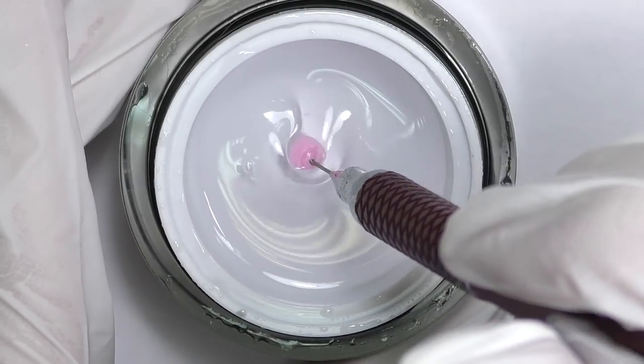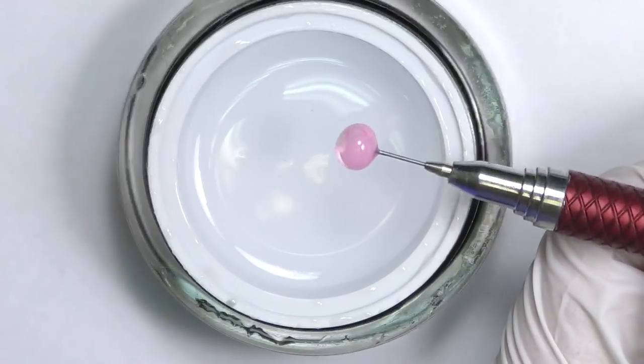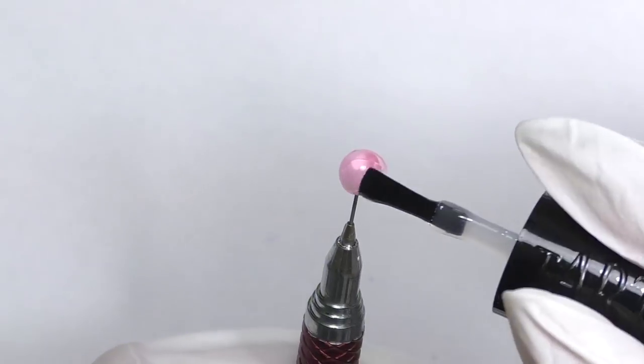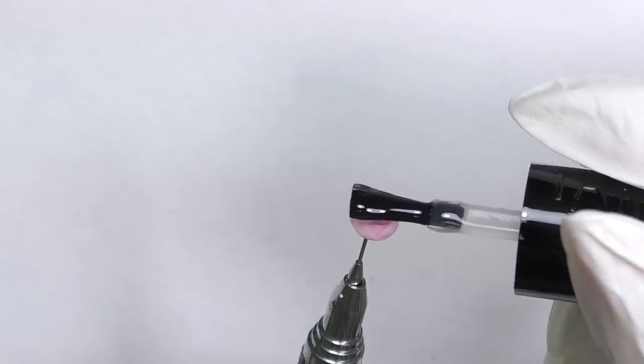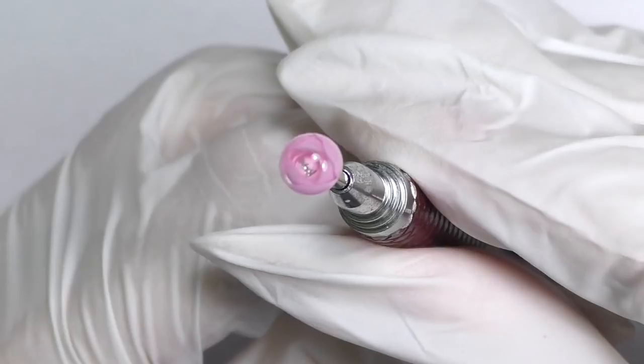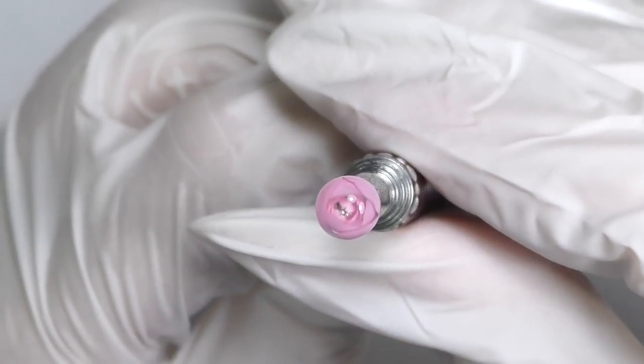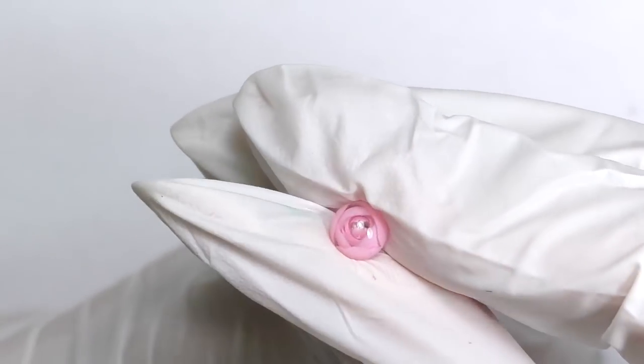So the last step should be dipping it into the builder gel again, curing, and then we will need to seal it with a top coat. While curing also do not forget to spin it all the time, and this is how the final look is like. Now we have this 3D flower.